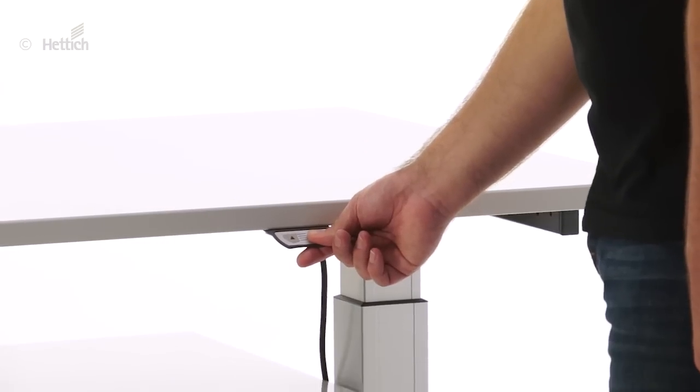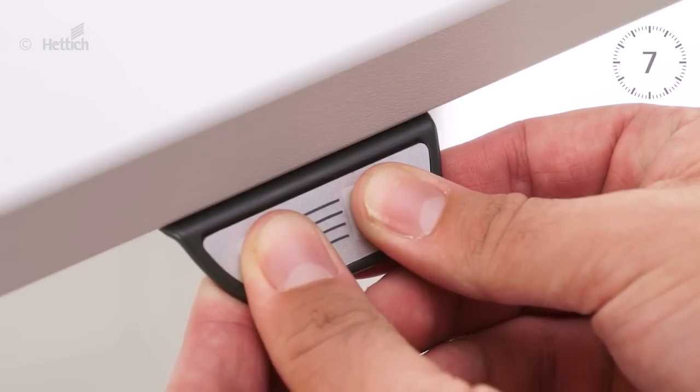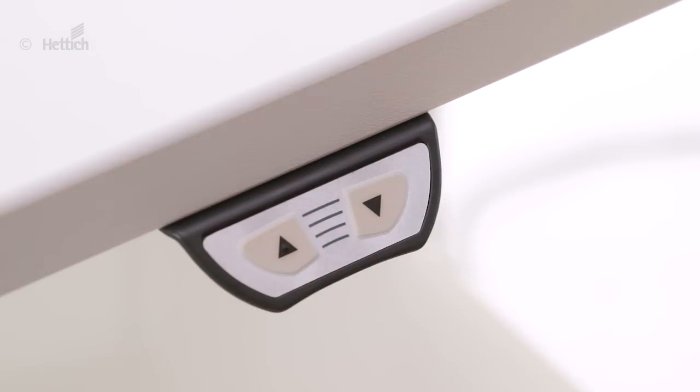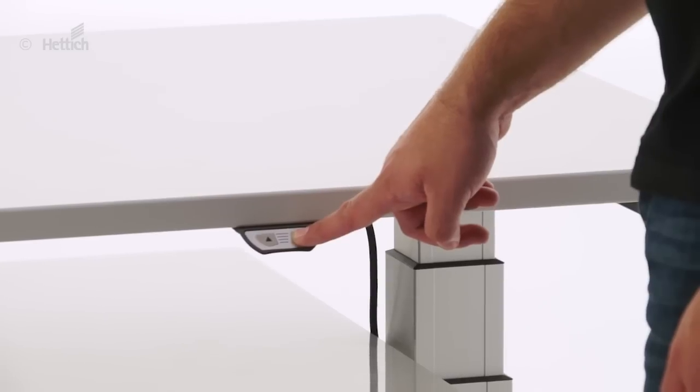For this purpose you have to press both buttons of the hand switch together for 10 seconds in the lower half of the lifting range. Subsequently the table stops at the programmed height.